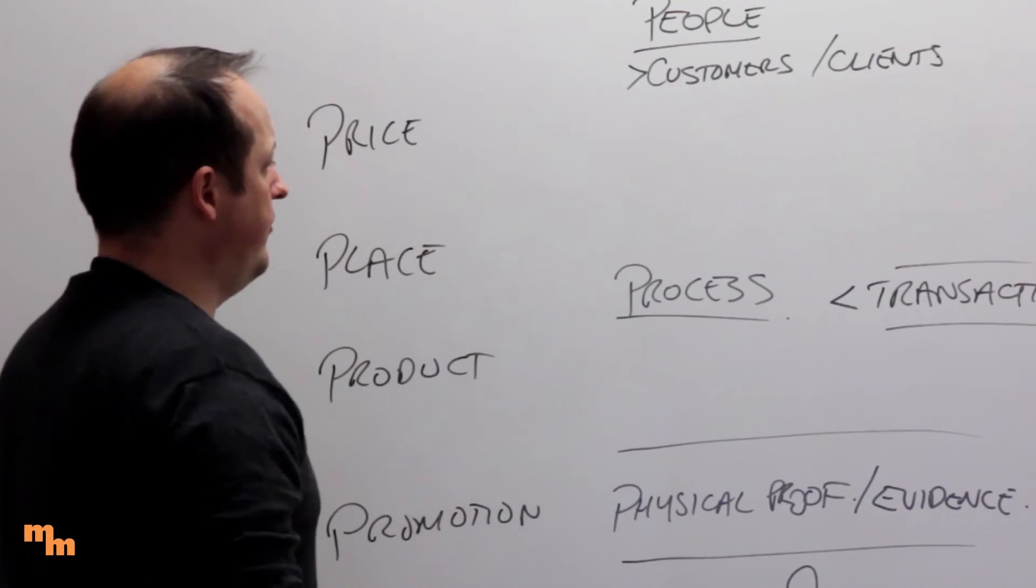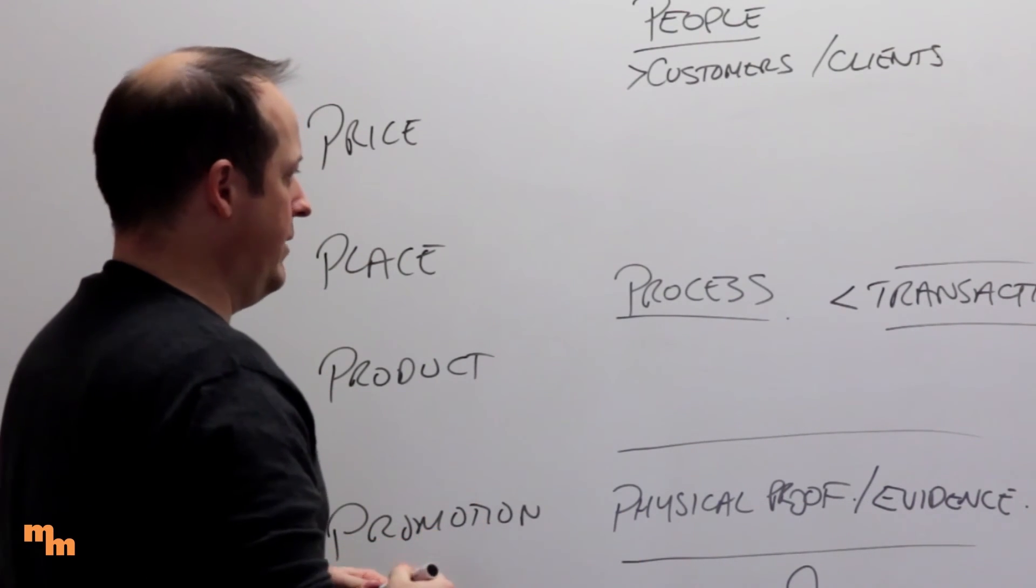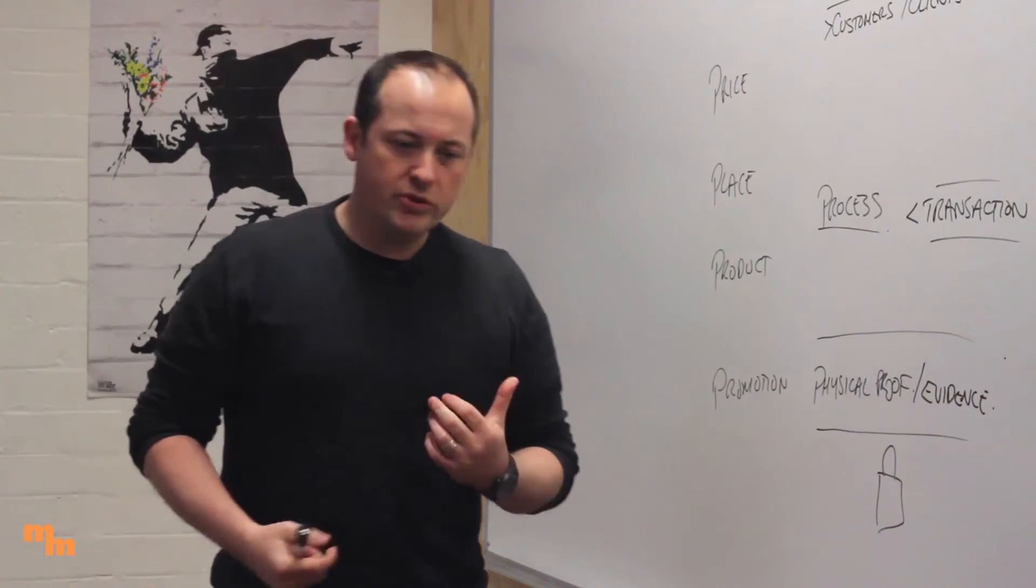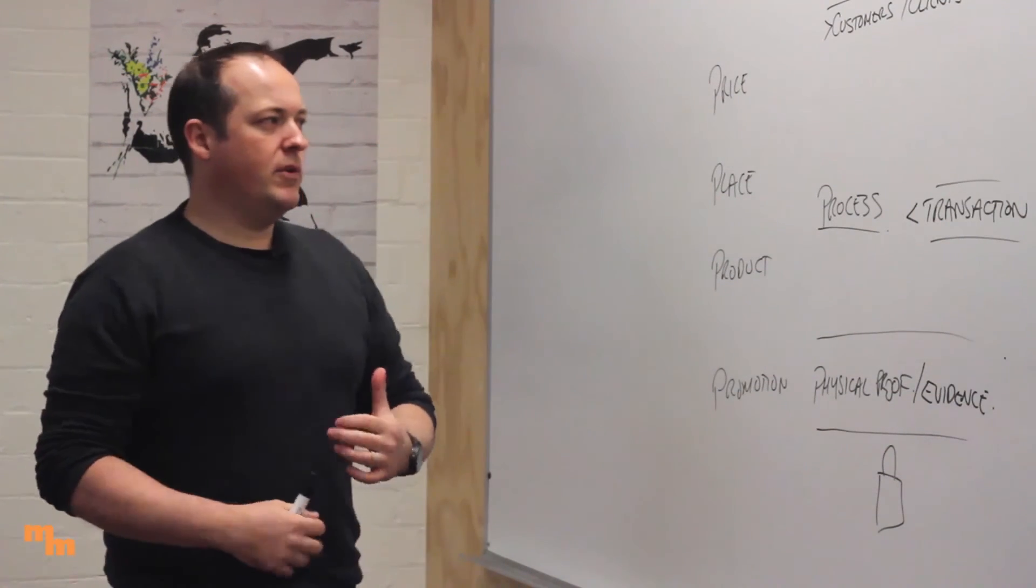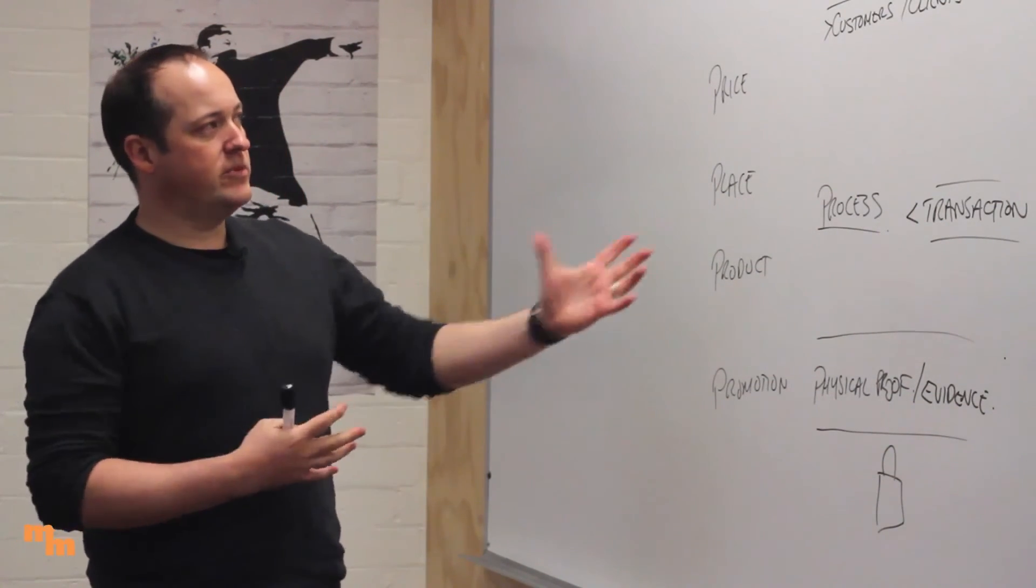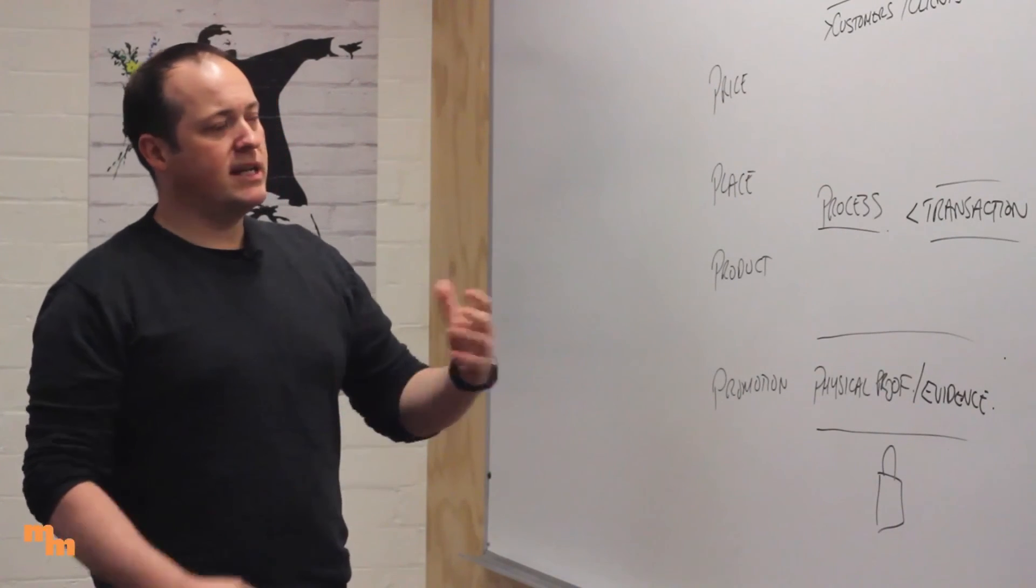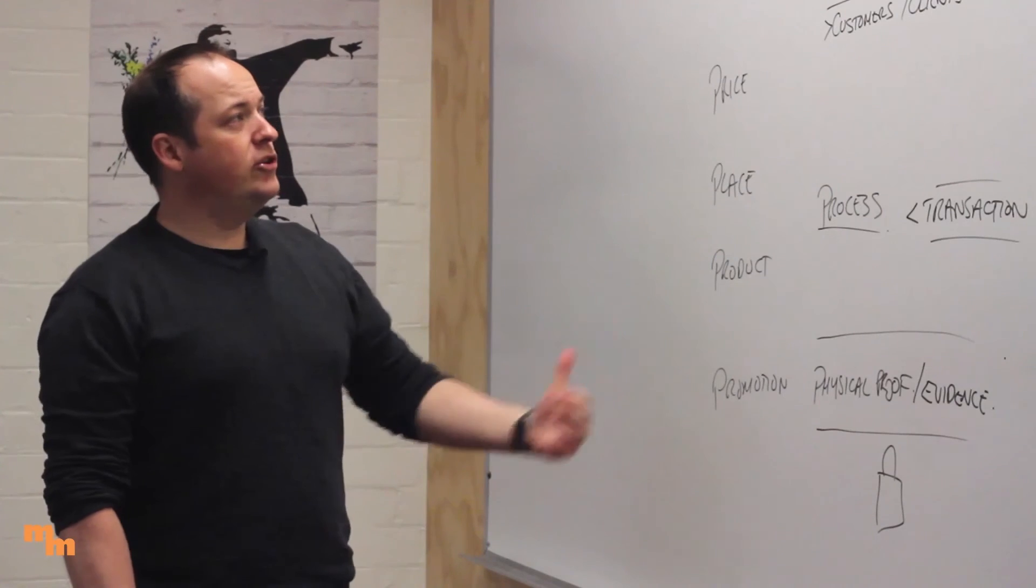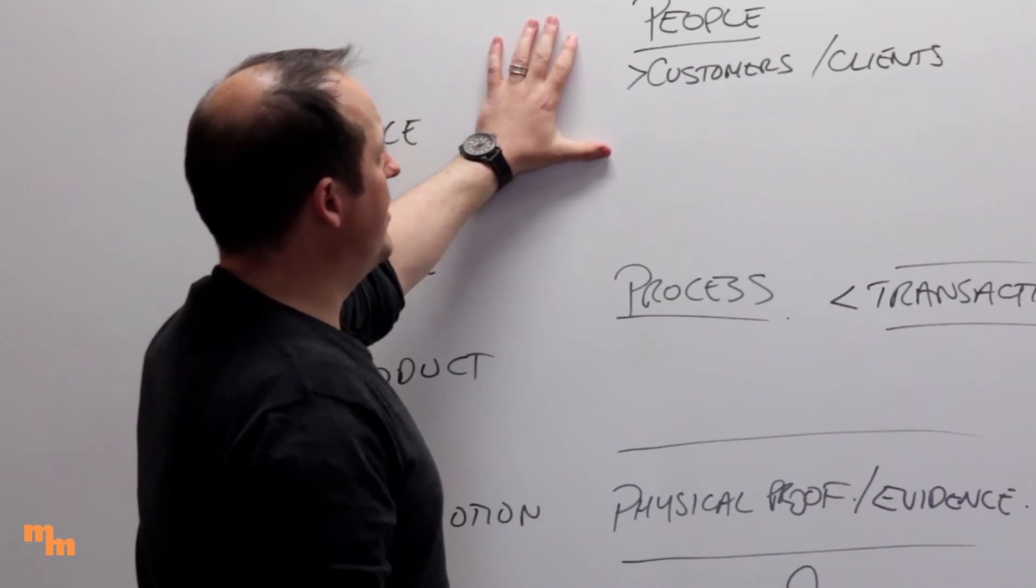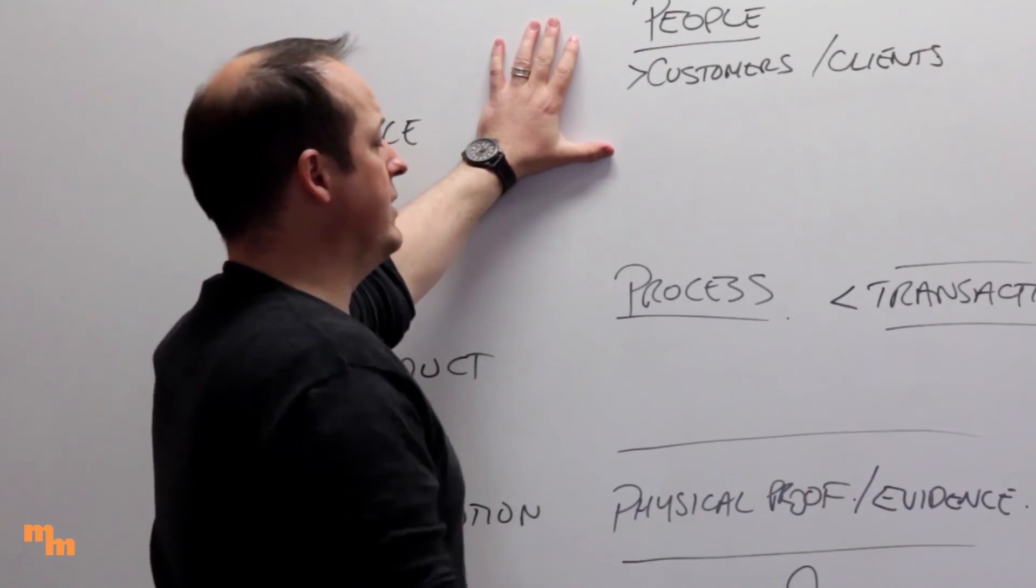All of that forms the seven P's of a marketing mix. The last thing I would say with a marketing mix is that a lot of people just look at this from a very customer centric point of view. You also need to think about it for your business because it starts to affect how you trade. When you're thinking about people, yeah, you might be thinking about your customers, but in this case it might also relate to your staff. Who are your people that work for you?